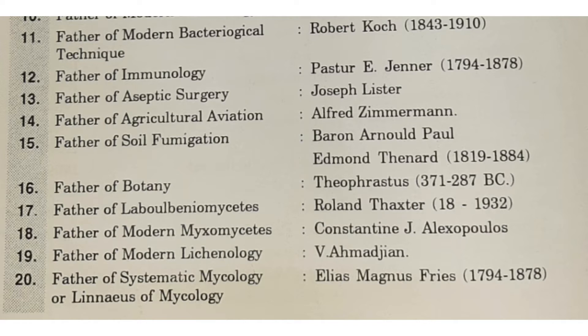Father of agricultural aviation is Alfred Zimmerman. Agar agriculture mein aviation chahiye to Alfred ke paas jao. Then father of soil fumigation: Baron Arnold Paul Edmund Thinerd. Soil ko fumigate karna hai toh Baron ke saath Thinerd karo — that is soil fumigation, Baron Thinerd.